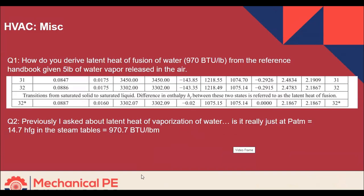Okay, a miscellaneous one about some steam table questions. Two part question. How do you derive latent heat of fusion of water, 970 BTU per pound, from the reference handbook given five pounds of water vapor released in the air? So I think there's a little bit of confusion of terms here. This 970 BTU per pound is not the latent heat of fusion. That's the latent heat of vaporization.